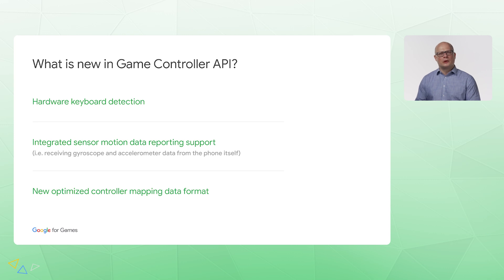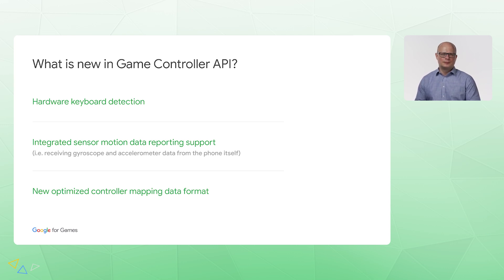What is new in the Game Controller API? Hardware keyboard detection, integrated cell motion data reporting support, and a new optimized controller mapping data format.